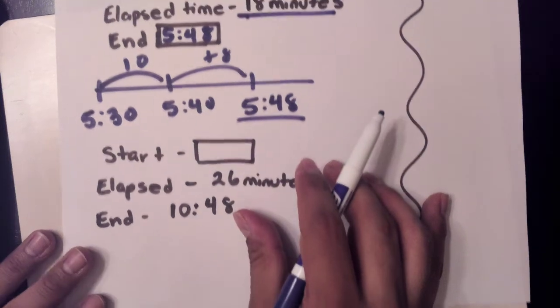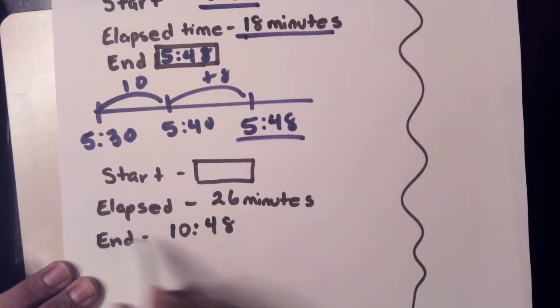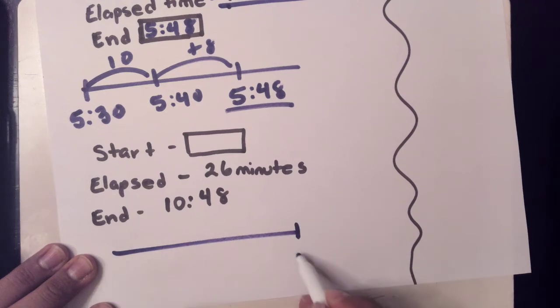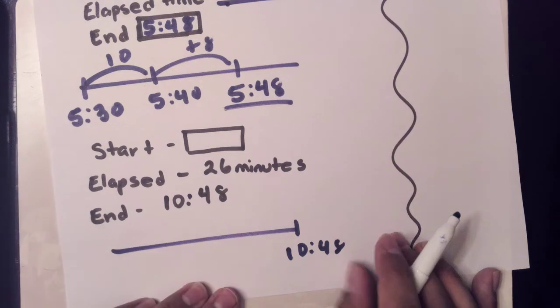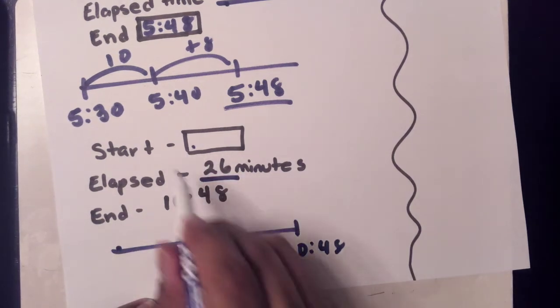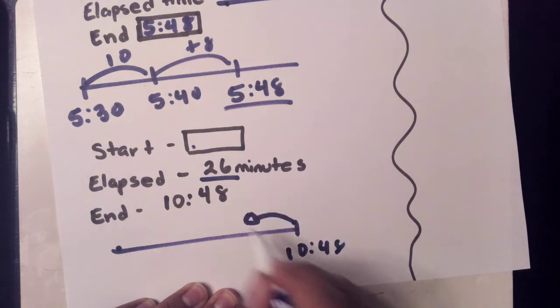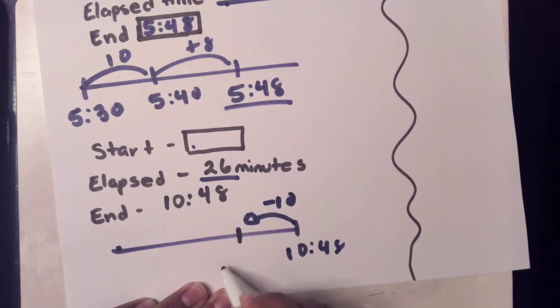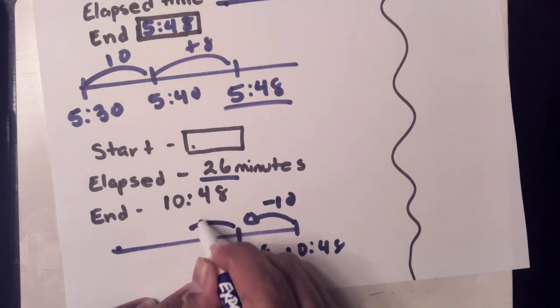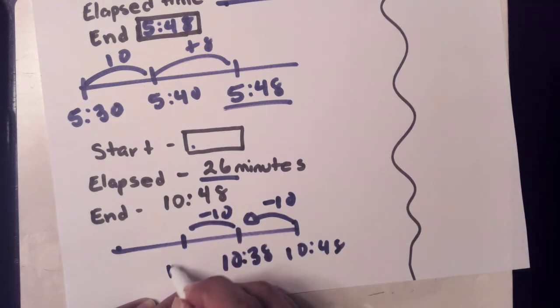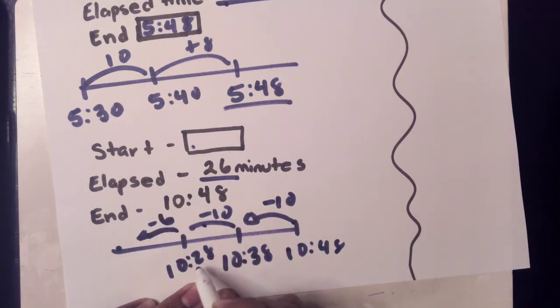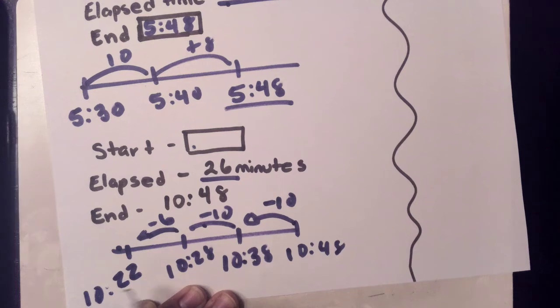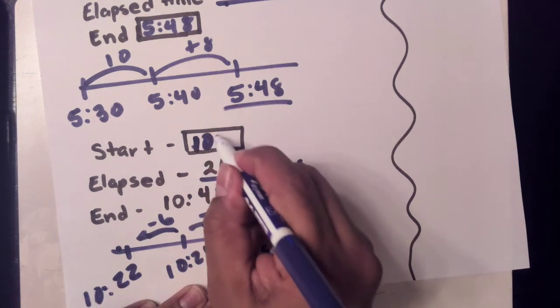But when we go back, we take away. 26 minutes—I want to go to the beginning, so I go back in time. Minus 26: let's take away 10, take away 10. So that's 10, 20. I need to take away 6. 28 minus 6 is going to be 22, so that's 10:22.